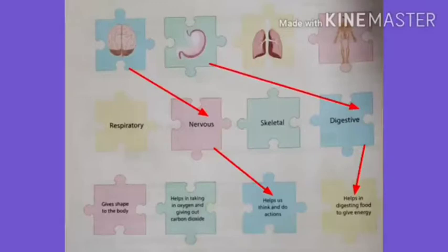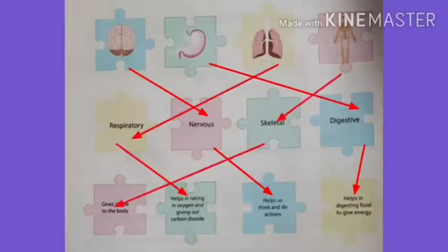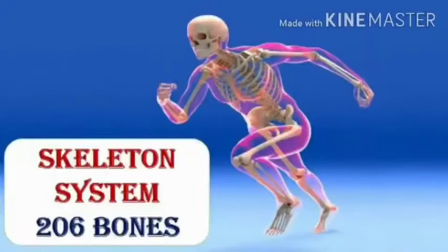You have already learned about the digestive system in standard four. The third picture is the lungs — these are part of the respiratory system. The function of the respiratory system is it helps in taking in oxygen and giving out carbon dioxide. The fourth picture is the skeleton system — its function is to give shape to the body. Today in this video, we will learn about the skeleton system.